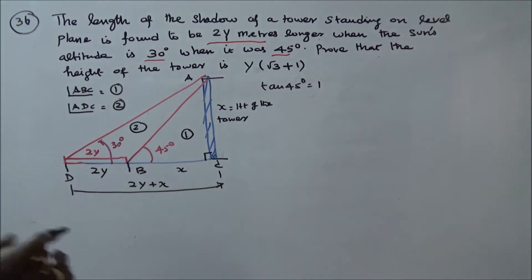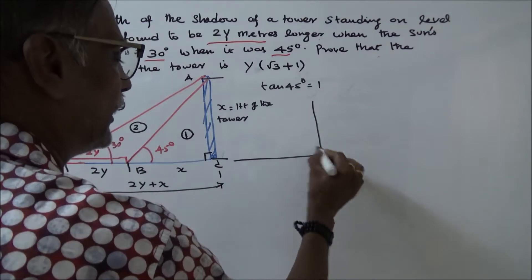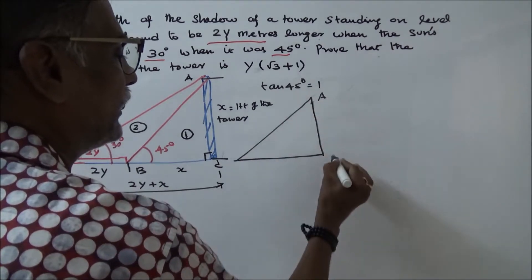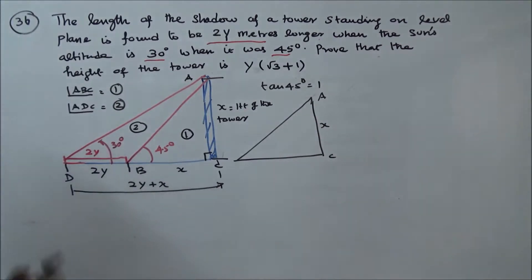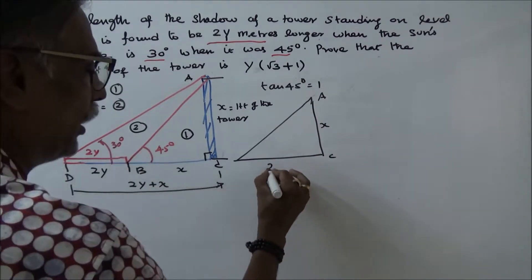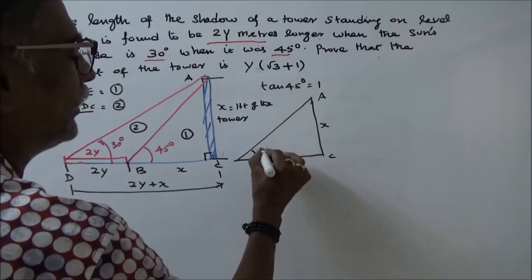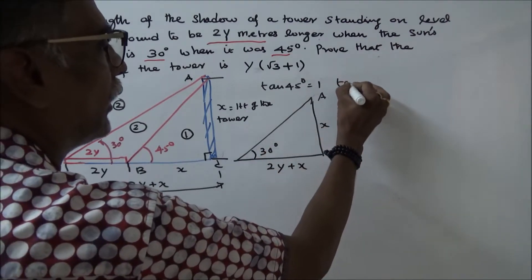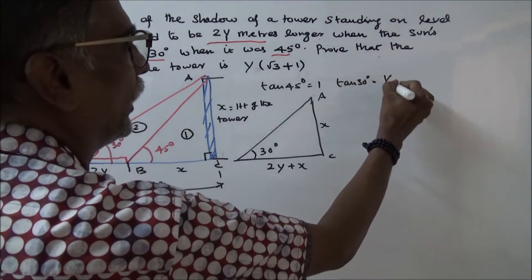Now taking the second triangle ADC: AC is the height of the tower, which is x. DC is equal to 2y plus x. The angle is 30 degrees, and tan 30 is equal to 1 by root 3.